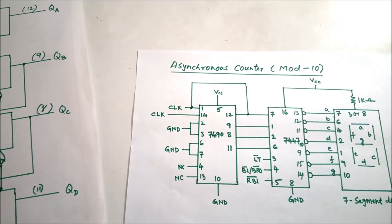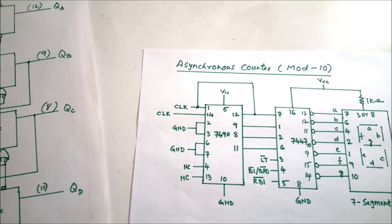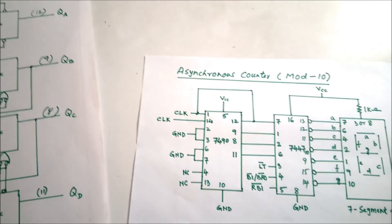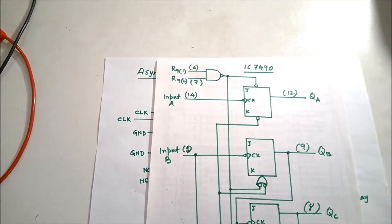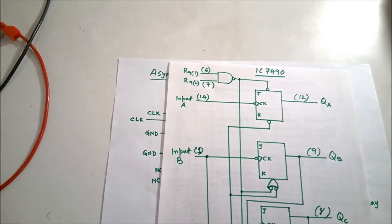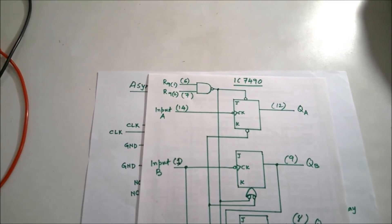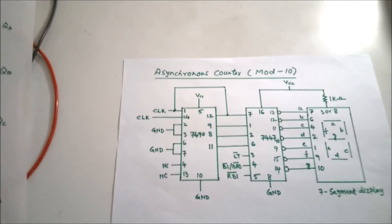With resets deactivated, it will display 0 to 9 in binary. To do that, clock 1 (pin 1) has to be connected to QA (pin 12), and the main clock input is given at pin 14. With this configuration, the 7490 will work as a mod 10 counter.